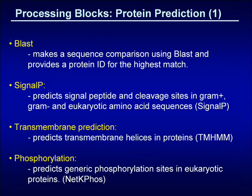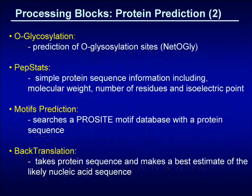Protein prediction processing blocks have also been developed. These blocks take a protein sequence as input and perform some form of protein prediction. The prediction may involve performing a sequence alignment or predicting structural or functional characteristics such as phosphorylation sites, signal peptides or transmembrane helices. Other protein prediction blocks predict simple protein sequence information such as molecular weight, the presence of motifs or O-glucosylation sites. The back translation block takes a protein sequence and makes a best estimate of the likely nucleic acid sequence.